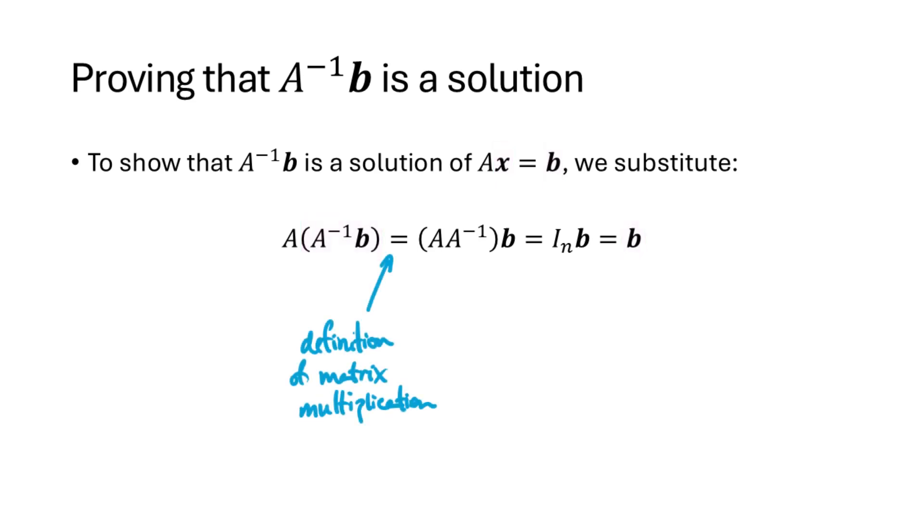Let's understand the steps here. First, we can rewrite A times A inverse B as A times A inverse times B. That's from the definition of matrix multiplication. Next we can replace A times A inverse by the n by n identity matrix IN. That's just the definition of inverse. And then the identity matrix multiplied by any vector is just that vector. That's the property of the identity matrix that we've seen several times in the last few lectures. So that's why A times A inverse B is equal to B, and that shows that X equals A inverse B is a solution of the equation AX equals B.